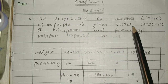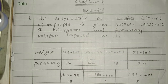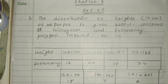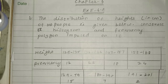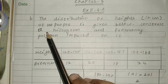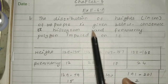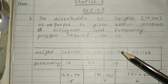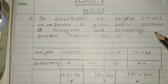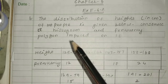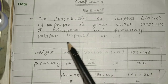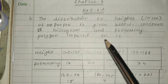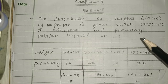The distribution of items is given in centimeters. The details of hundred people are given below. We need to construct the histogram and frequency polygon — that is what we need to draw.